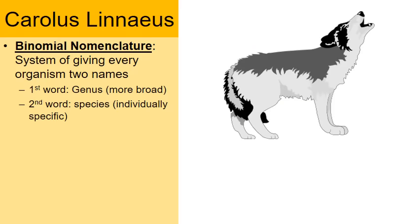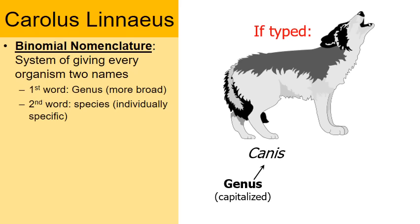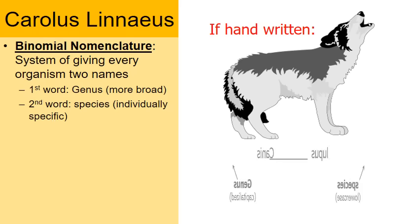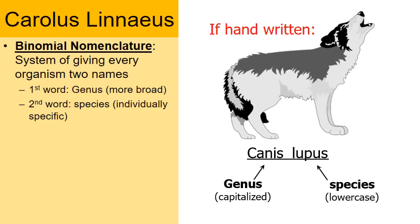Here's another example — a gray wolf. If typed, the genus is Canis, capitalized, and the species name is lupus, in lowercase, in italicized print. If handwritten, it's still Canis lupus with the genus capitalized, but the only difference is underlining the two words.